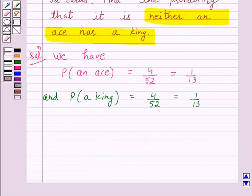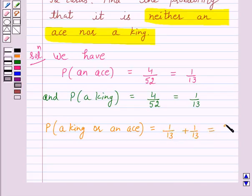So for this, first we will find the probability of a king or an ace, which is equal to 1 over 13 plus 1 over 13, which is again equal to 2 over 13. So 2 over 13 is the probability that the card drawn at random is either a king or an ace.